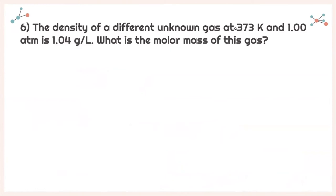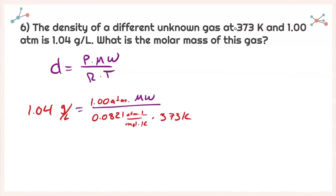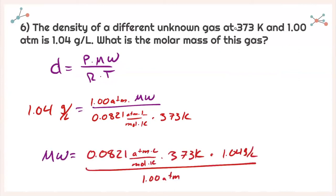Question 6 says: the density of a different unknown gas at 373 Kelvin and 1.00 atmosphere is 1.04 grams per liter. What's the molar mass of this gas? Using the same equation — density equals pressure times molecular weight divided by R times temperature — plugging in everything we know and isolating molecular weight, we get 31.8 grams per mole.